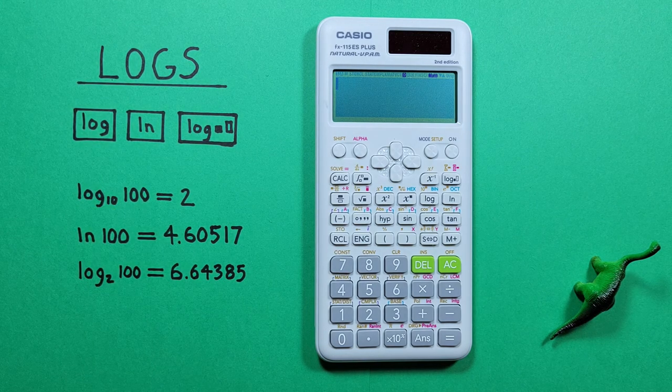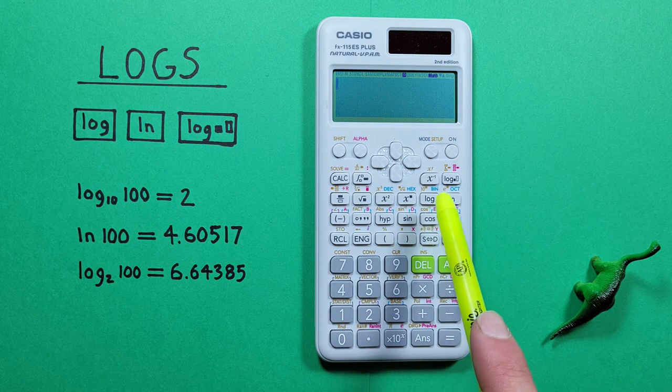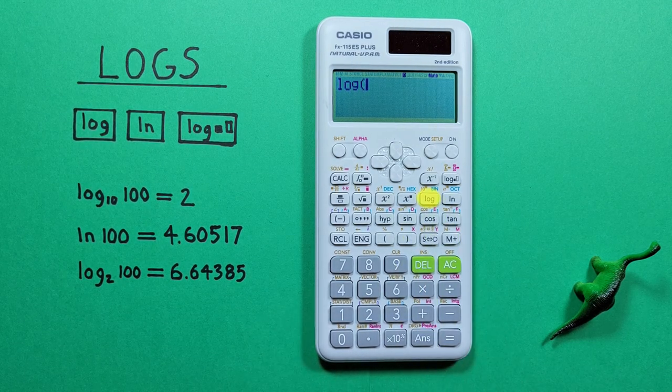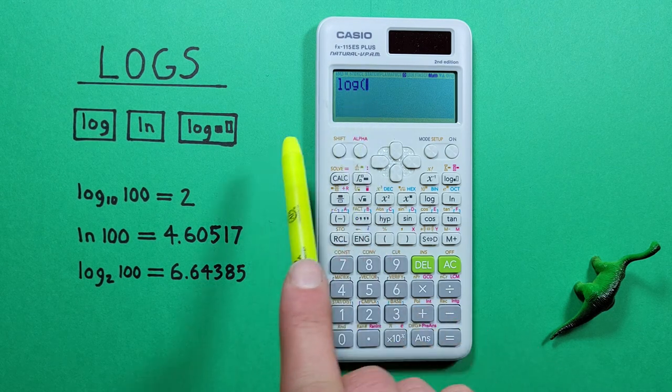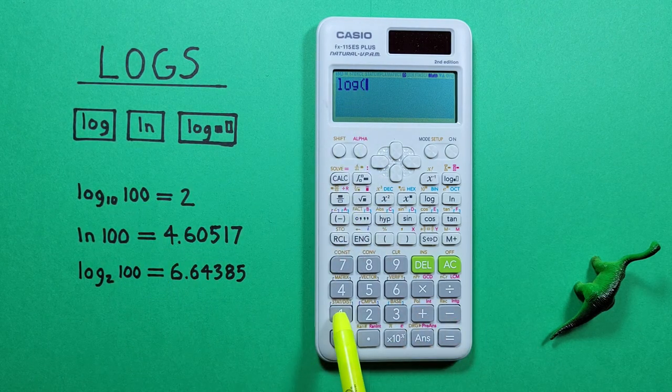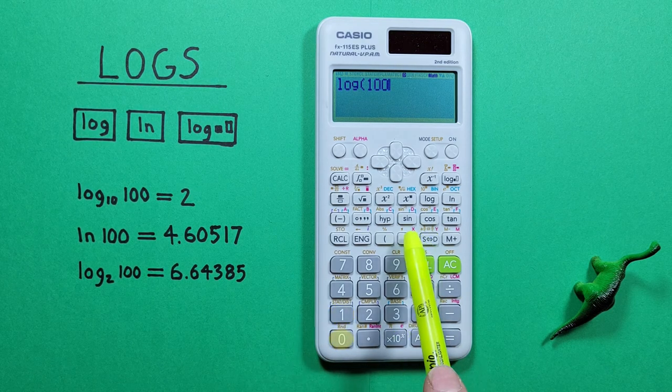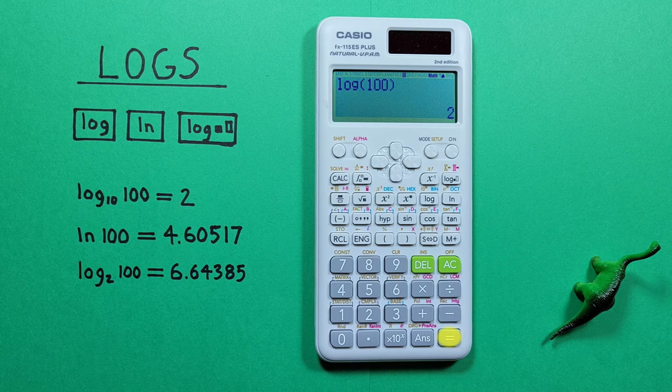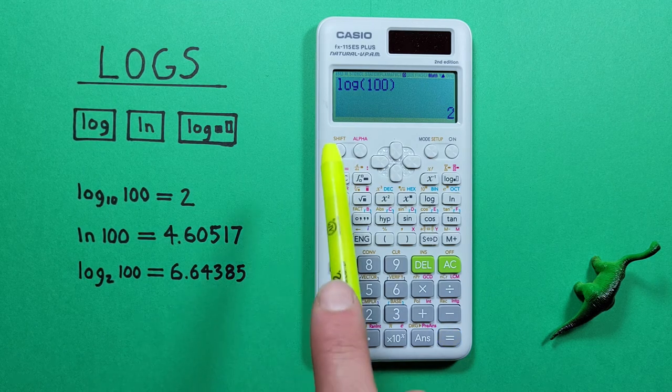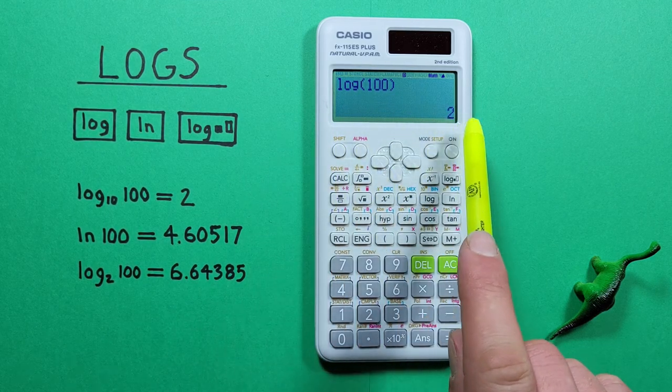If we want to find the log of 100, what we do is press log and it doesn't show but there's a base 10 here and then we enter the 100, close our bracket and press equals. And we get a result of log of 100 is equal to 2.